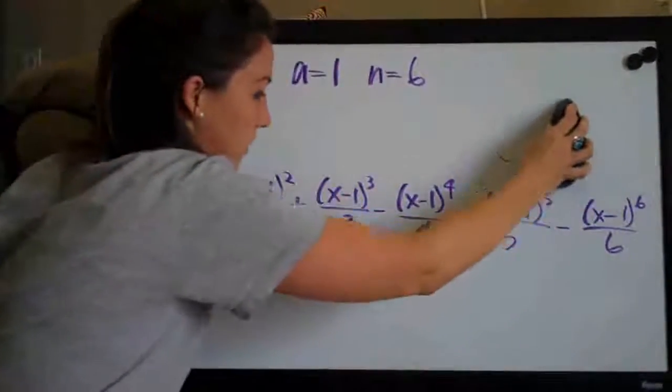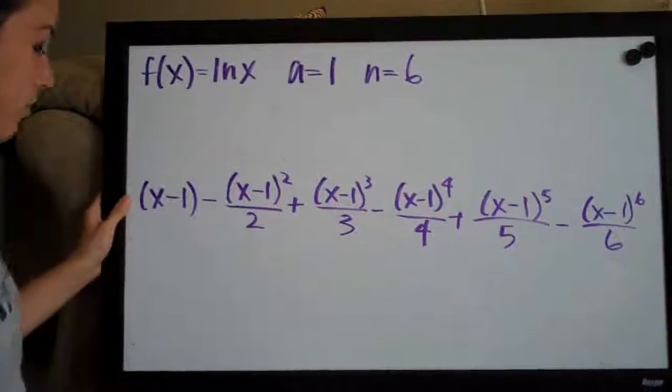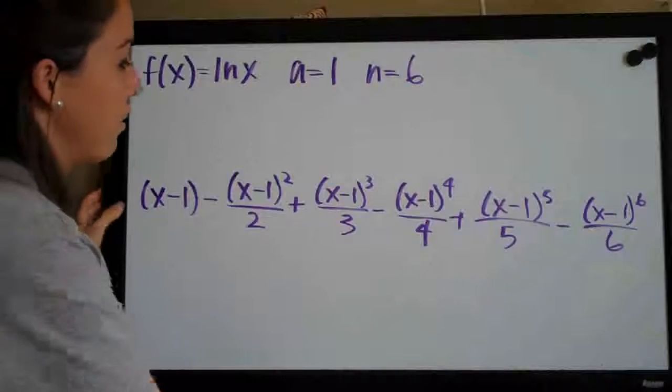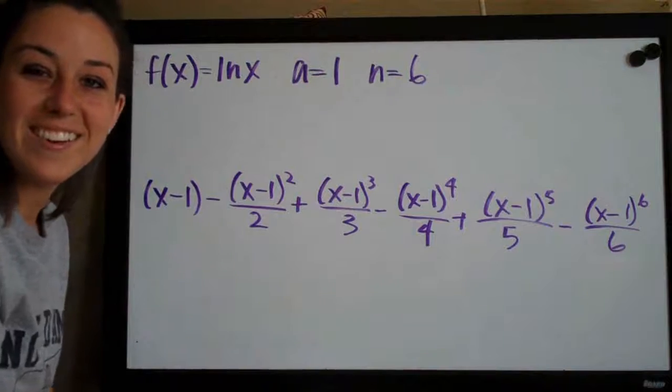We can get rid of all this stuff just so you can see it really clearly. And that's it. Pretty much construct the table. Write out your Taylor polynomial and simplify until you've got something clean. See you guys next time.